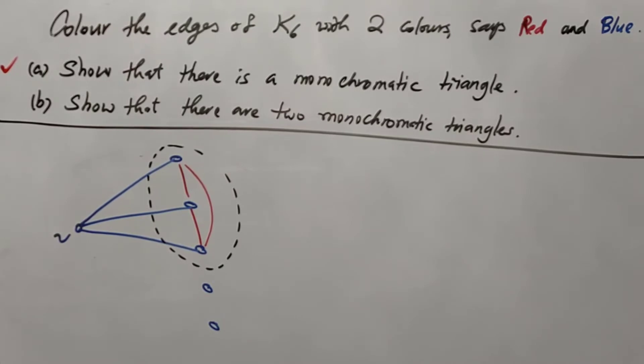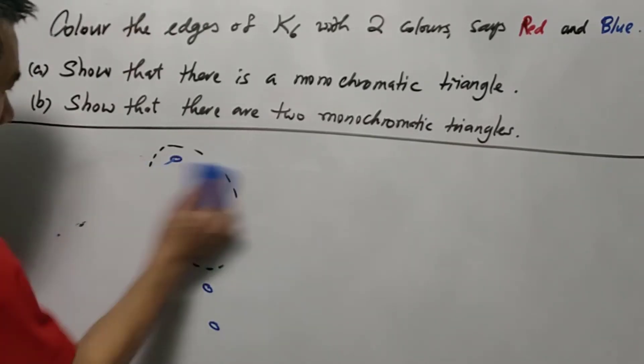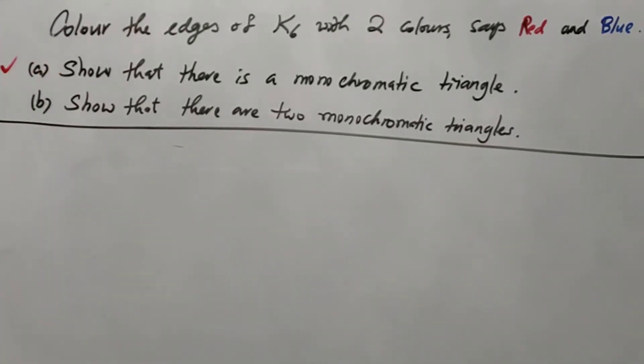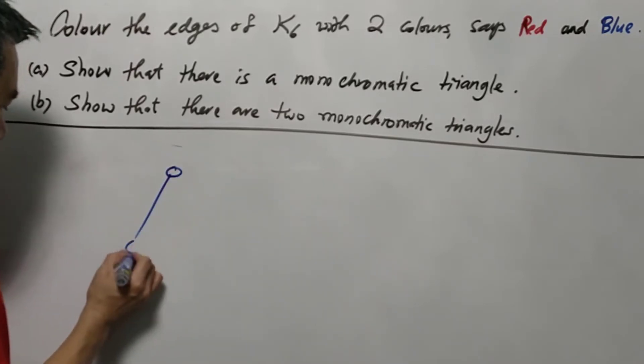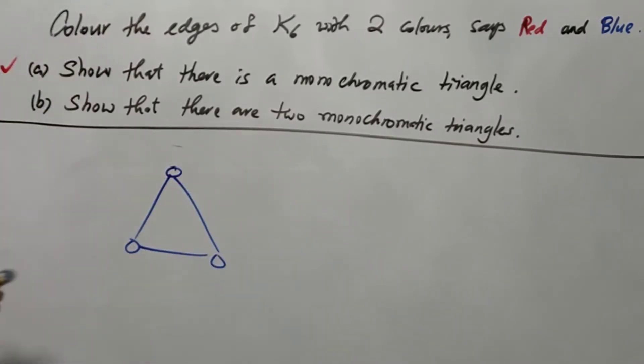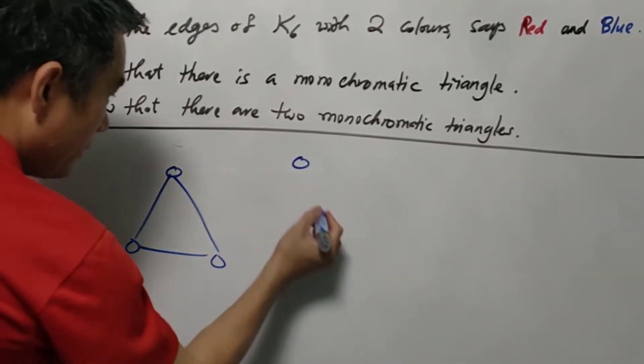Question B is more interesting. We have to show that there are two monochromatic triangles. We have to use the previous result. Now we already have a monochromatic triangle. Let's say it's a blue triangle.